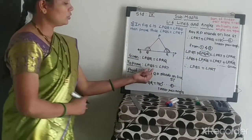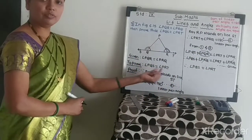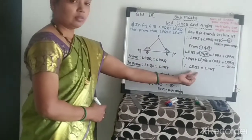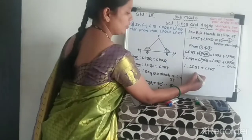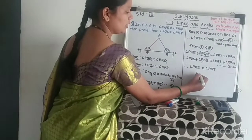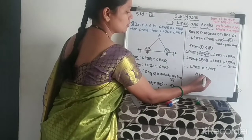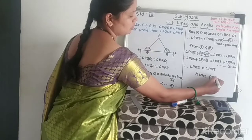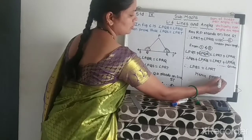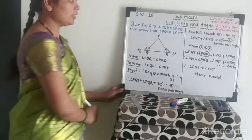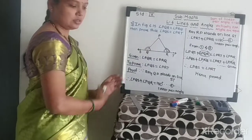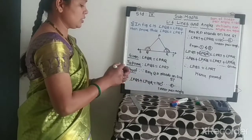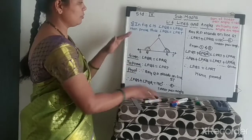Therefore angle PQS = angle PRT — which is what we had to prove. Hence proved. To summarize: from the given part, we used linear pair angles to write two equations, equated the left-hand sides since both right-hand sides were 180°, then substituted the given condition to reach the required proof.